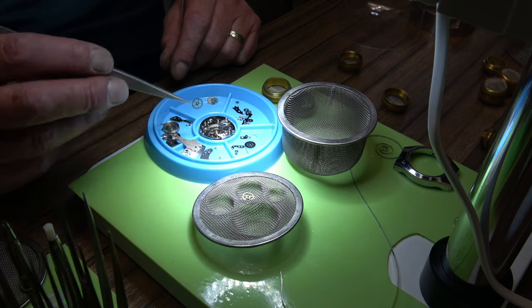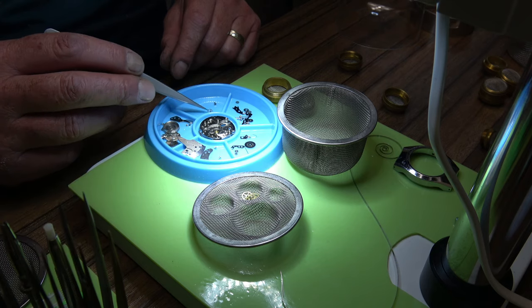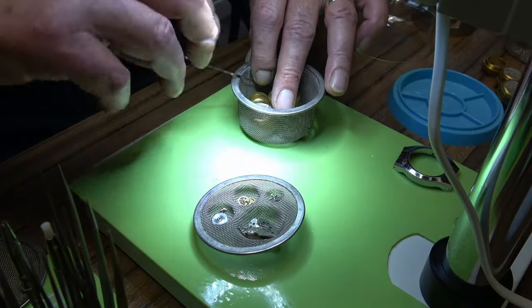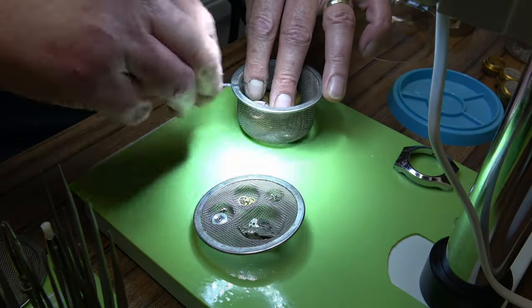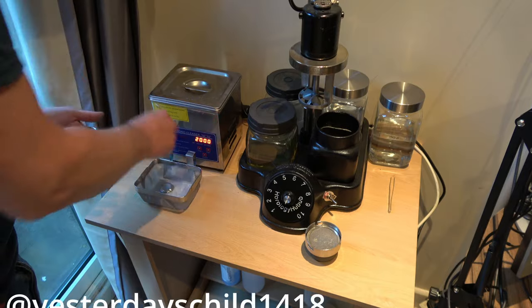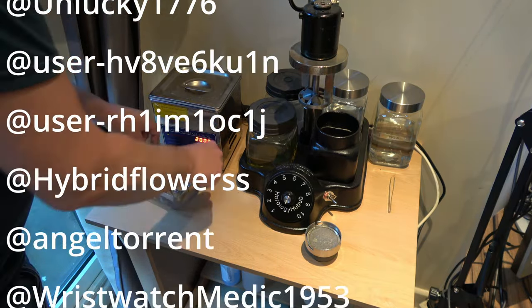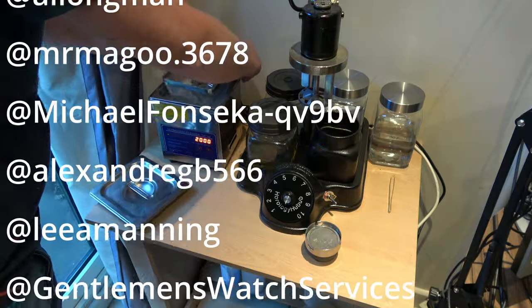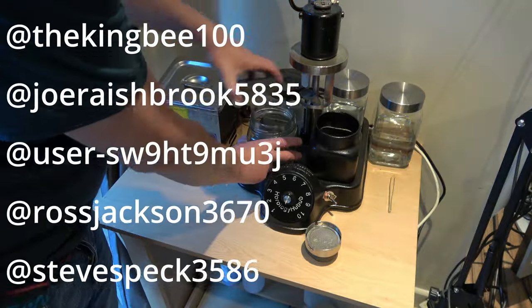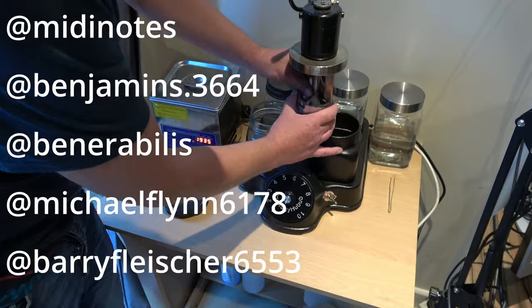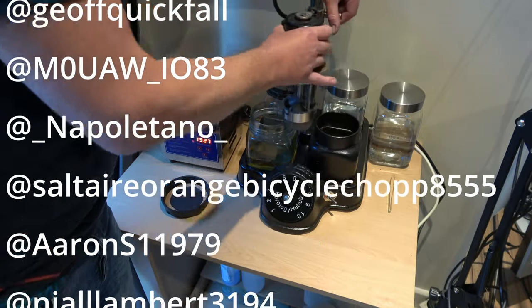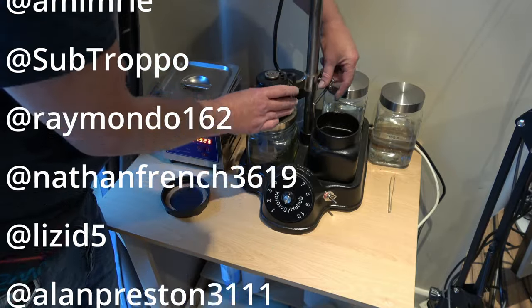With everything disassembled, we can put it into the baskets ready for the cleaning machine. With everything in, the last thing to go in is the mainspring, and then we can get it onto the cleaning machine. At this point in the video, lots of people put in their Patreon. I don't have that, so what I have done is I put the names up of everybody that's commented on any of the videos that I've done. So that's right from the very first up until now. If you've left a comment, you'll see your name up on the screen.